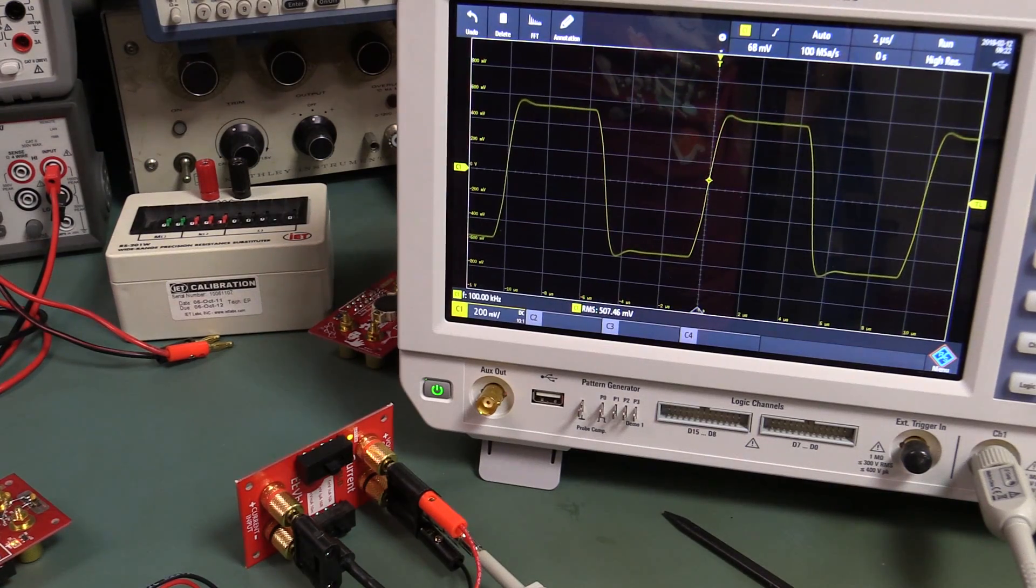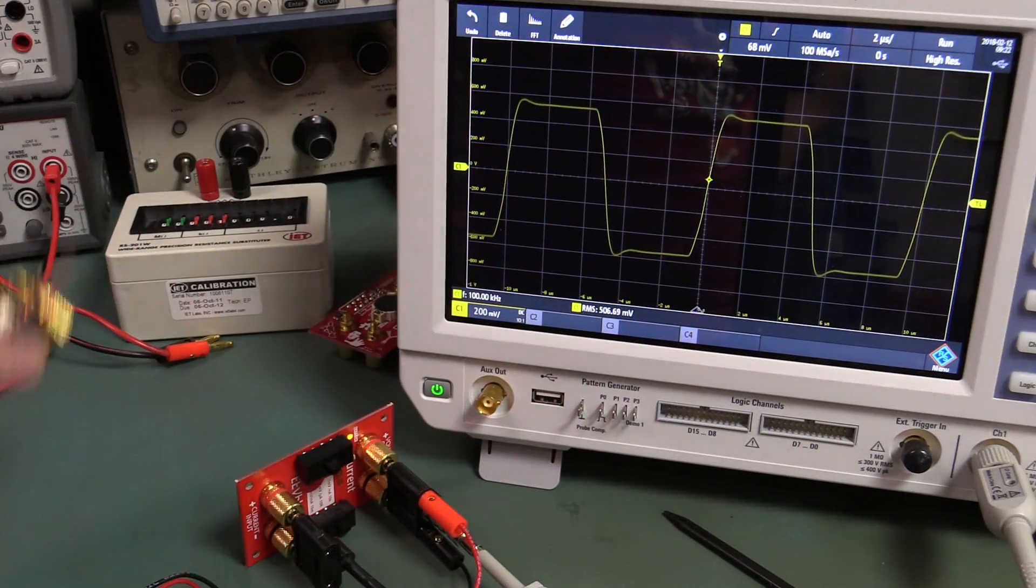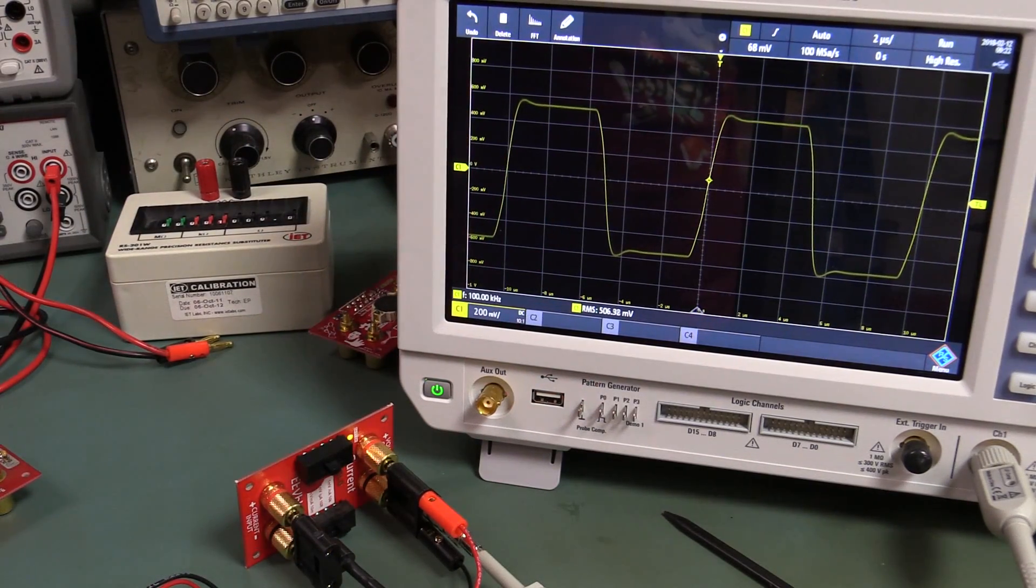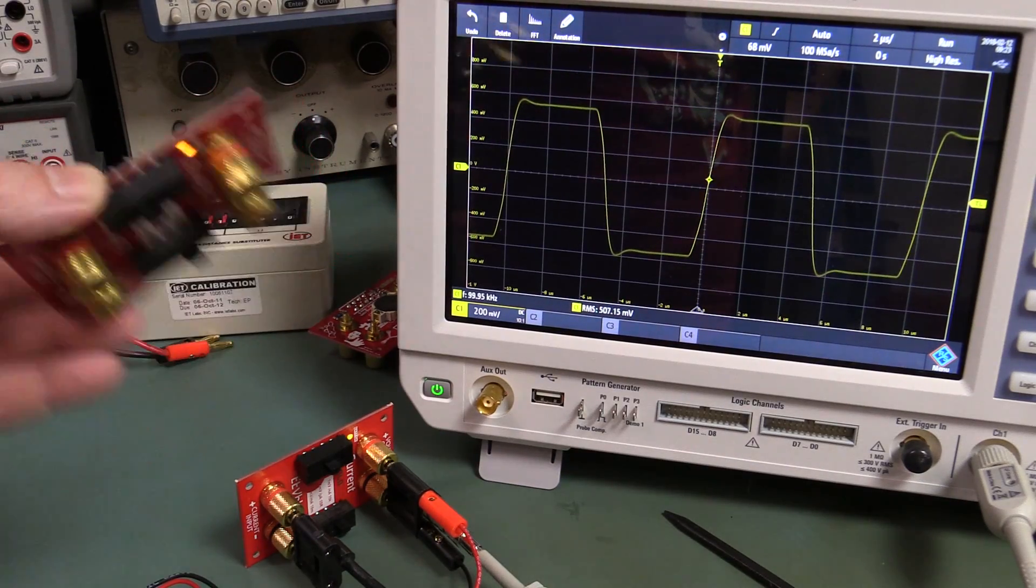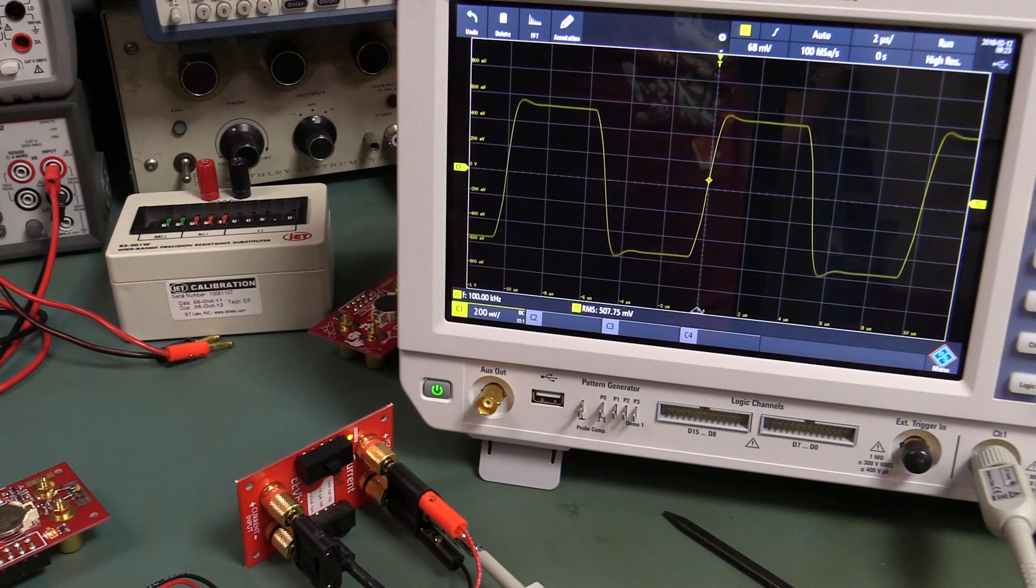The other one, bypassing the virtual ground with the two caps, actually works better, I think, in this particular case, even though it's not necessarily the best way to do it. So that's rather interesting.